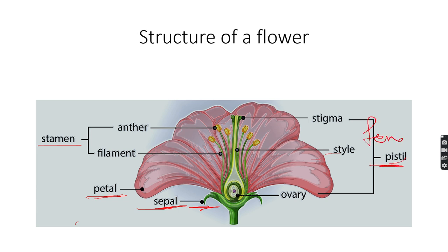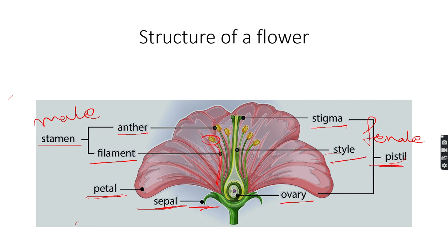The pistil is basically the female reproductive part and the stamen is the male reproductive part. Stamen carries the anther and filament. The anther is this structure here, and this part is called the filament. In the case of the pistil, there are three parts: stigma, style, and ovary.